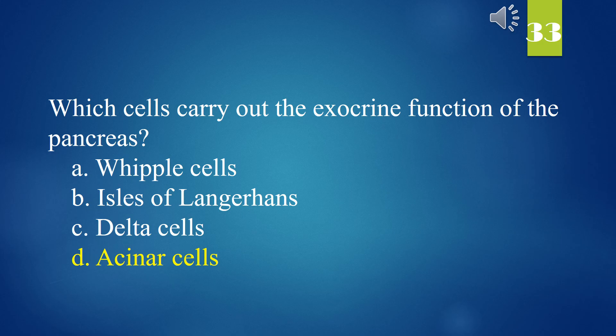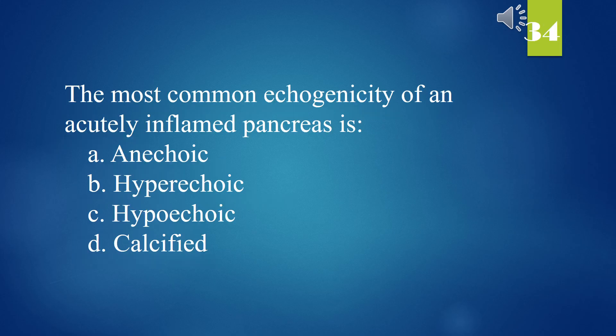The most common echogenicity of an acutely inflamed pancreas is: A. Anechoic. B. Hyperechoic. C. Hypoechoic. D. Calcified. The answer is C. Hypoechoic.